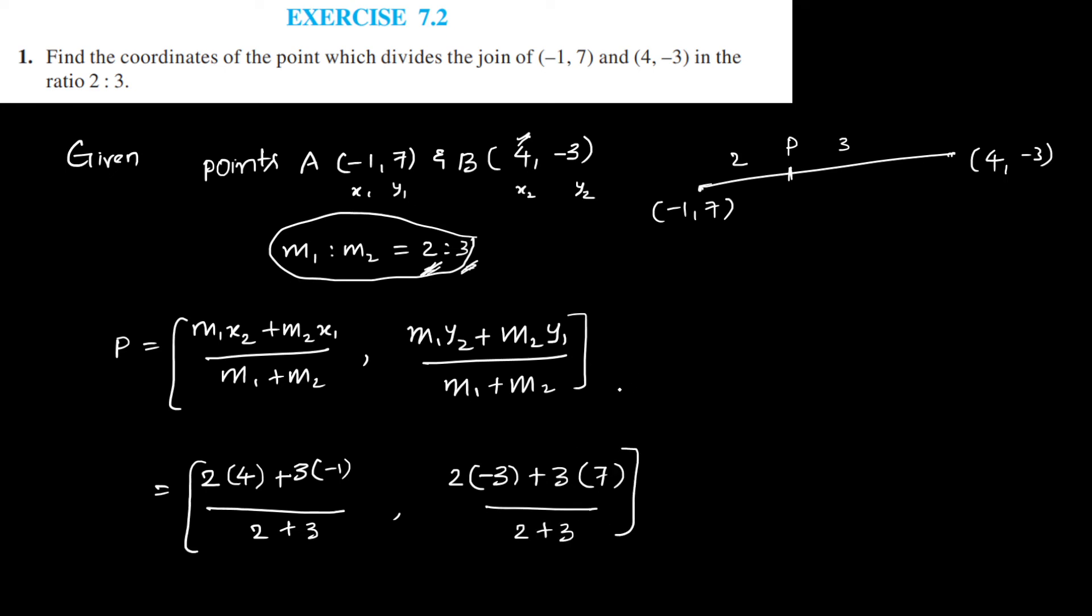Now that will become 2 times 4 is 8 plus 3 into -1 is -3 by 2 plus 3 is 5, comma 2 into -3 is -6 plus 3 times 7 is 21 by 5.